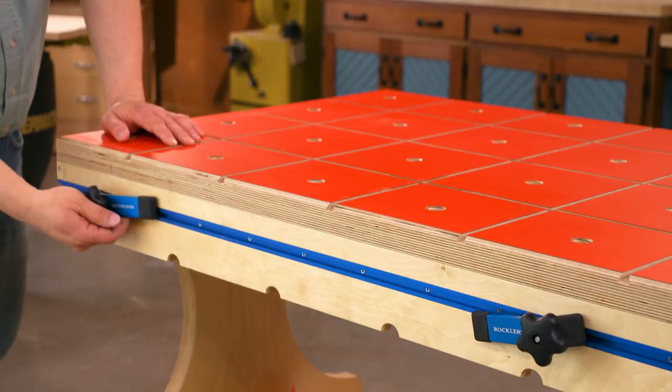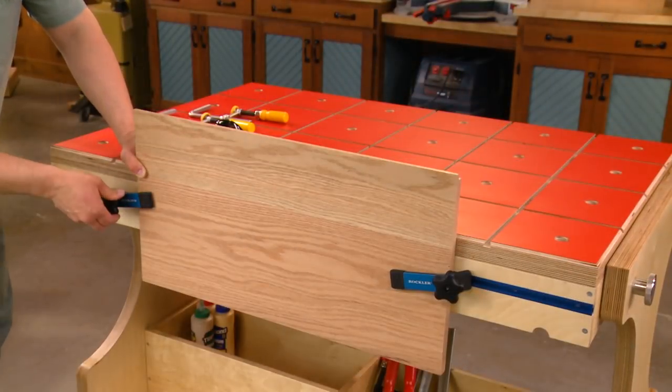Moving on to the length sides, there are two Kreg T-tracks installed for any hand planing or router work.